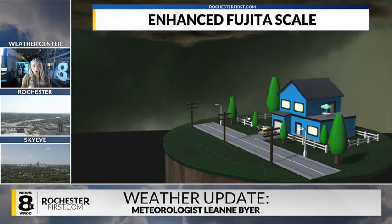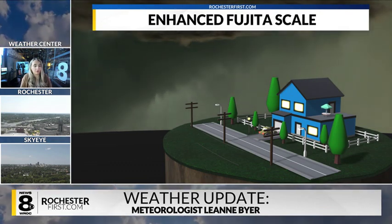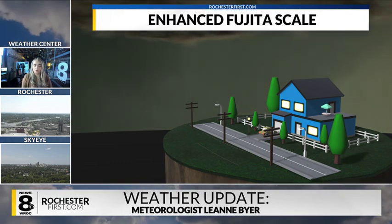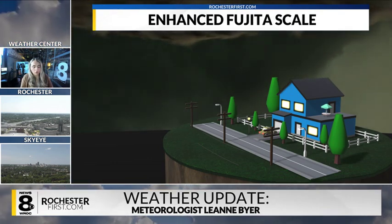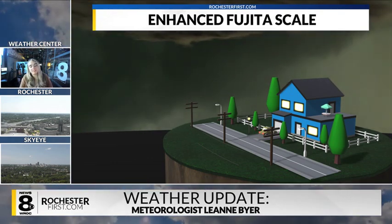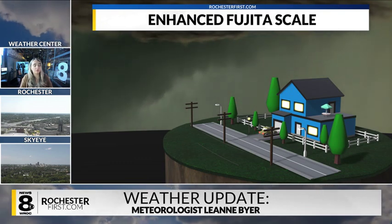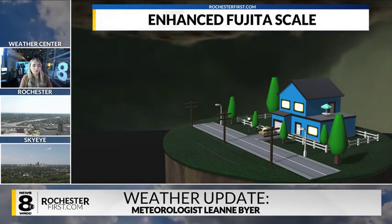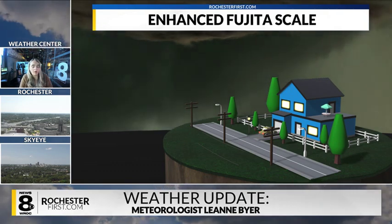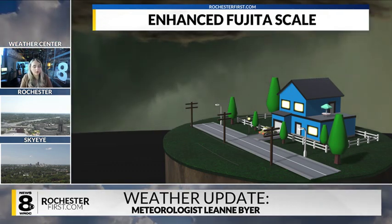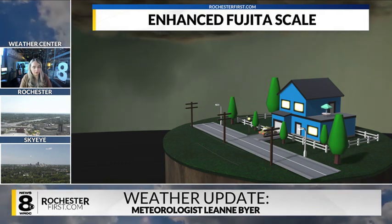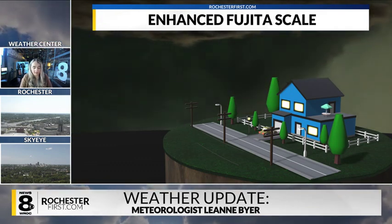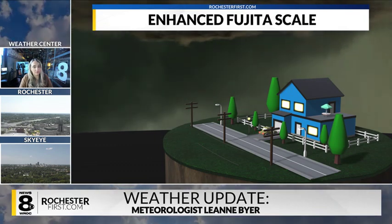Unlike hurricanes, which are categorized as soon as they start developing and could be long before they make landfall, tornadoes actually cannot be assessed until the event is over. Meteorologists then head out to sites that were potentially radar-indicated or where people had visuals of the tornado, and they assess the damage associated with it.